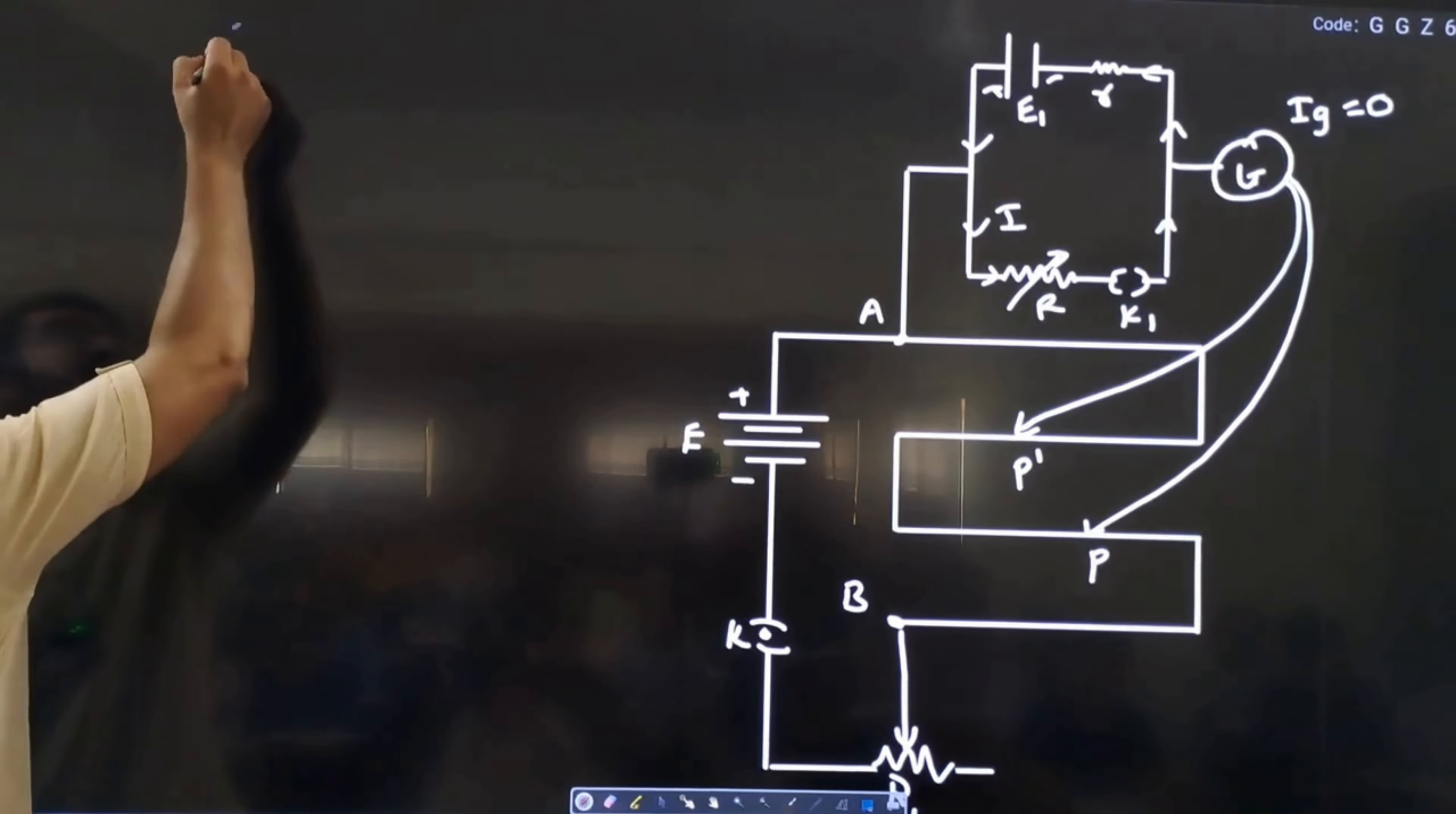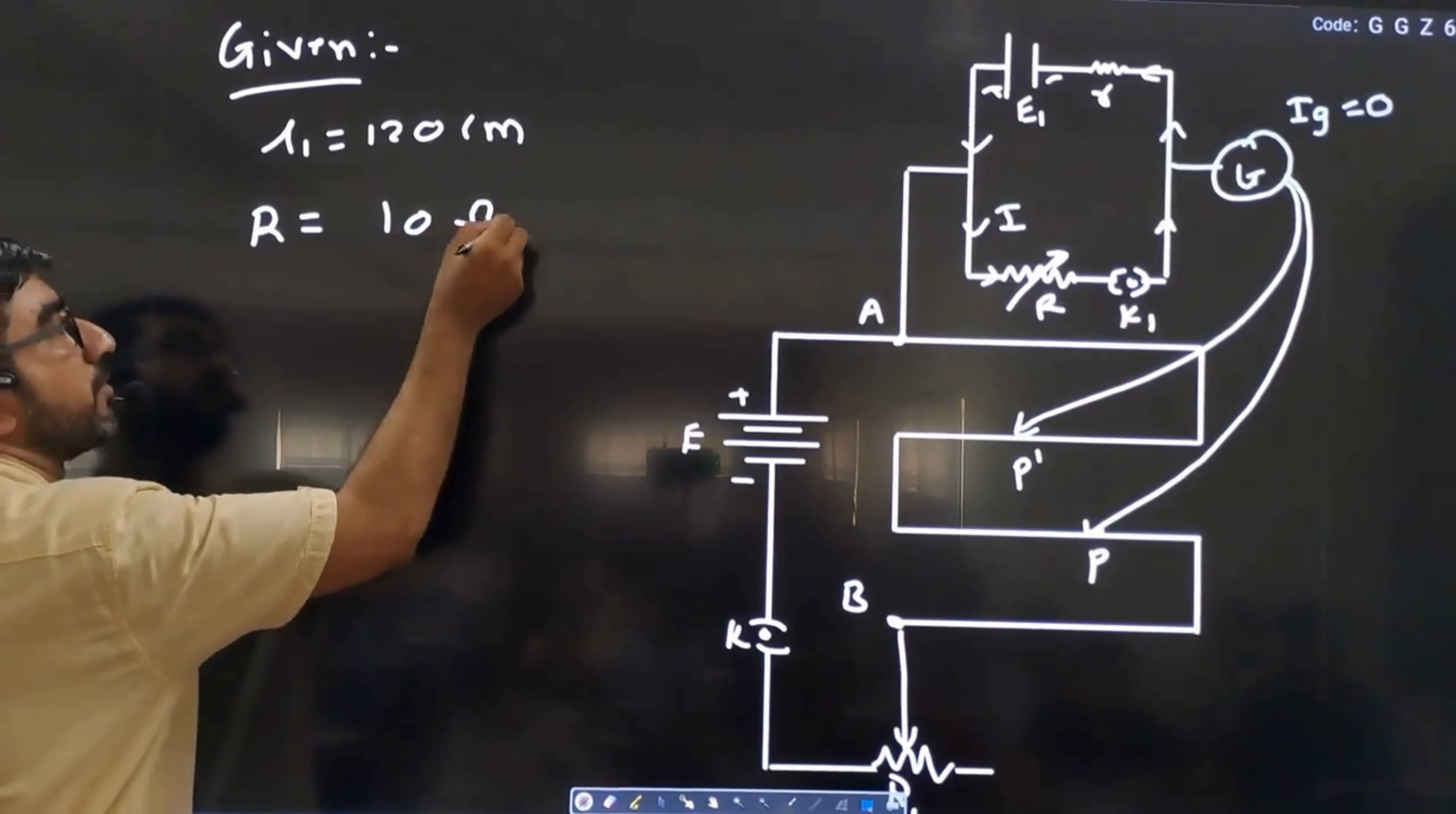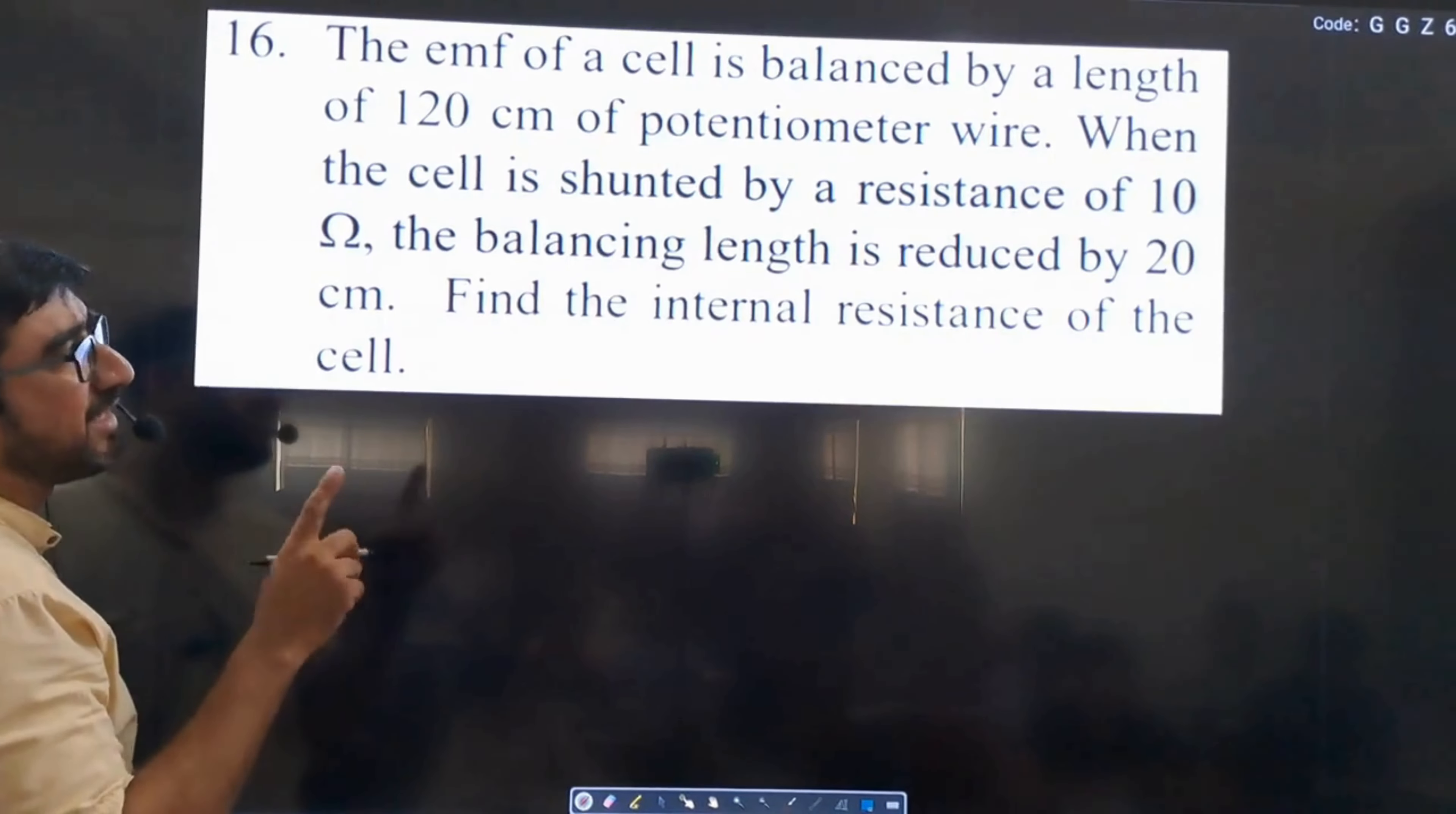When the cell is shunted by a resistance of 10 ohm, you have a key close to it. So this is the value of 10 ohm.